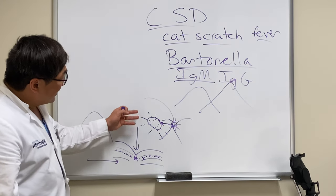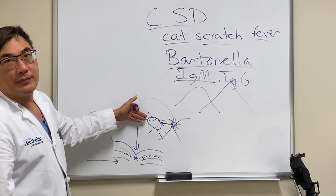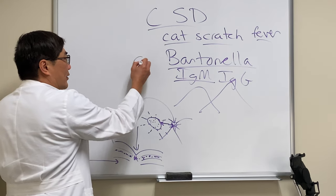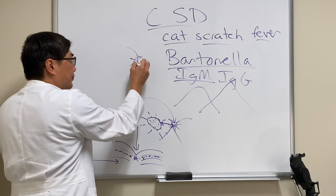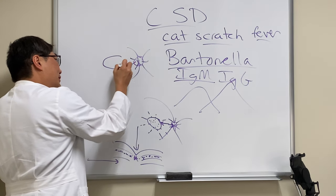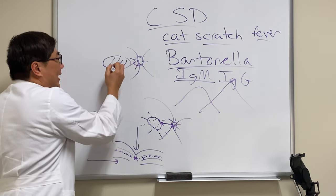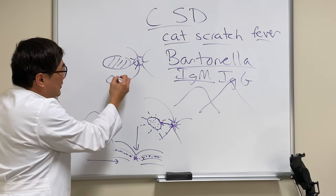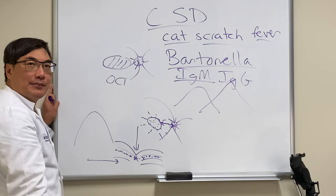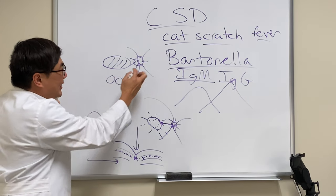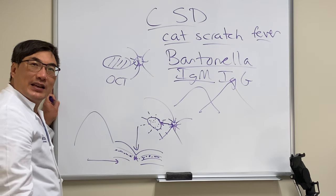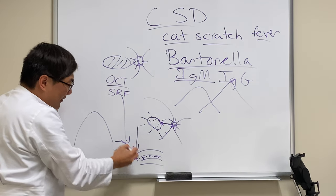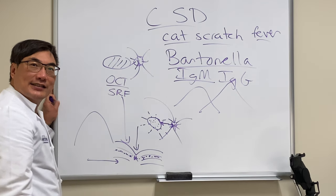In textbooks they always show the macular star figure — that one's easy. The hard case is when the disc is swollen and there's only subretinal fluid, which you can only see on OCT. Sometimes you can see the fluid with your ophthalmoscope, but we need to do OCT on every swollen disc because what we're looking for is the subretinal fluid. Later, the exudate and star figure will appear.